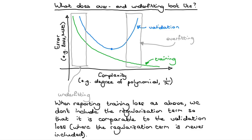I should also add that when reporting training loss in these plots, we don't include the regularization penalty term, so that the value on the error axis is comparable between the training and validation numbers. On the validation data, you would never include the regularization term — regularization is there to limit model complexity and make it generalize better.